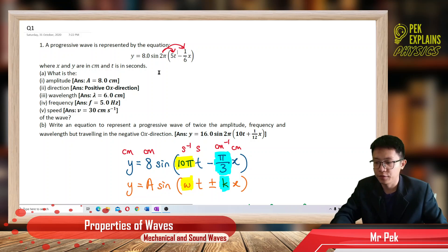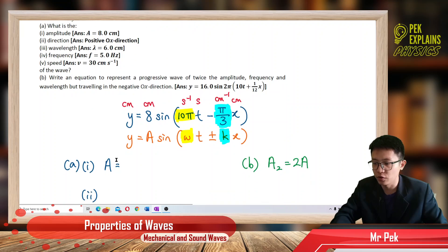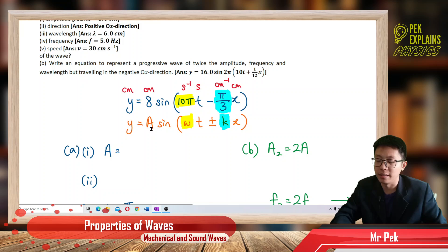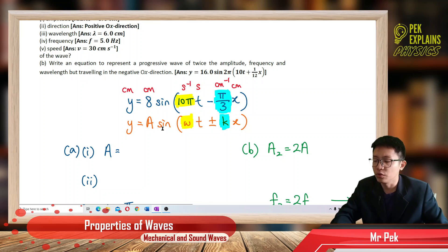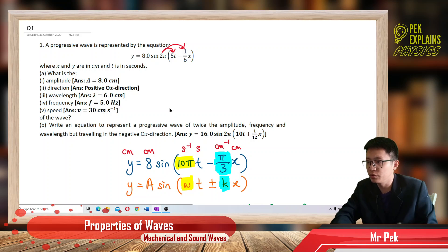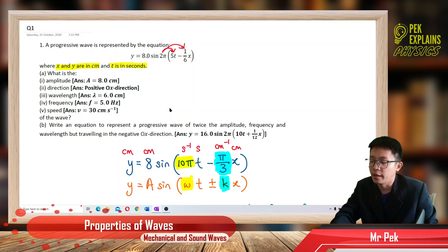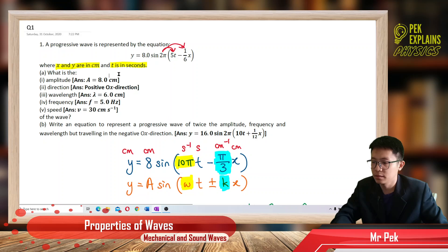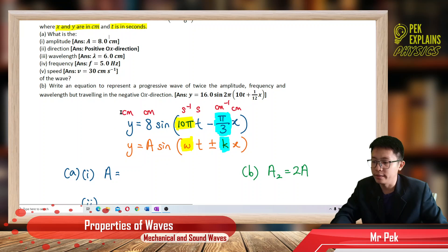After we multiply inside, only then do we compare with the general formula y equal to A sine (omega t plus or minus kx). From here we can see that the amplitude is 8, omega is 10 pi, and k is pi over 3. Be careful with units — x and y are in cm, t is in seconds, so the amplitude is in cm, the wave number k is per cm, and omega is per second.